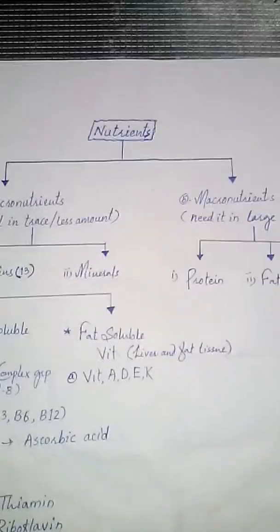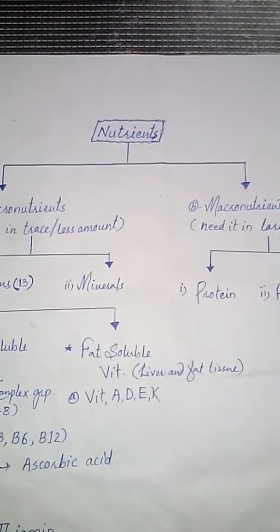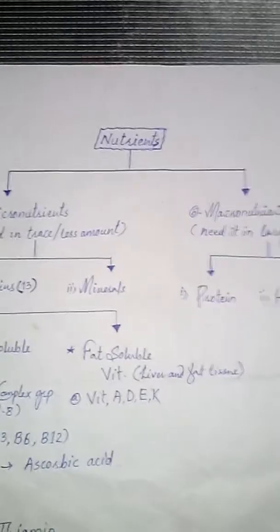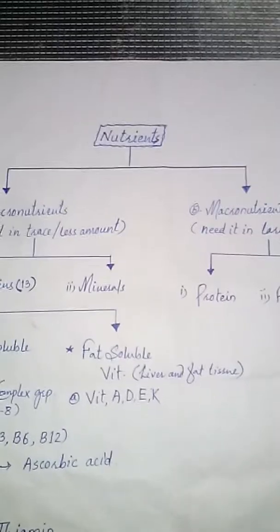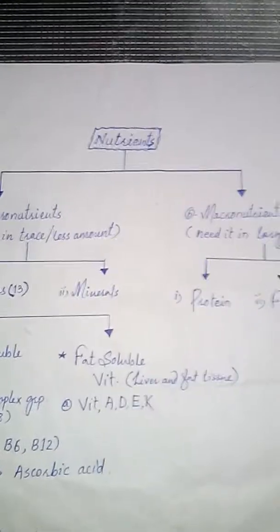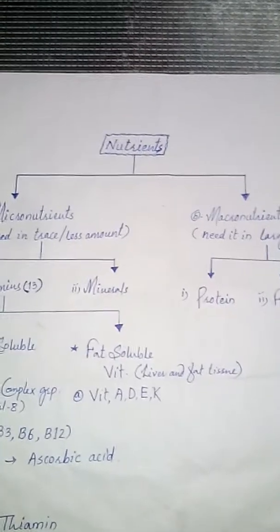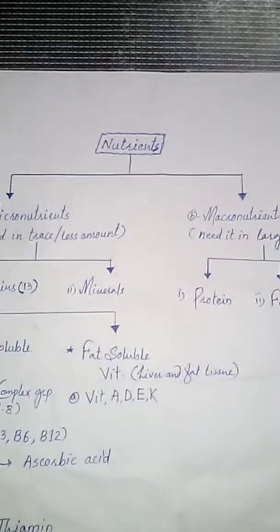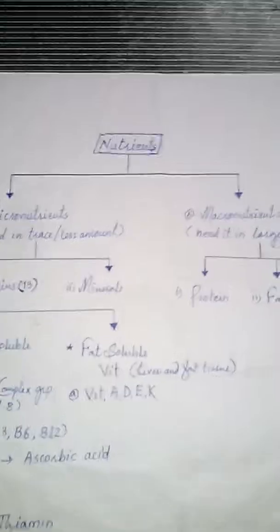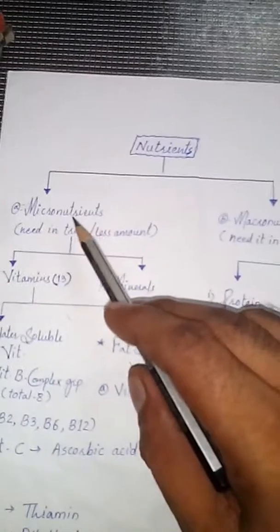Hello friends, here I am with one more lecture on the topic nutrients. A nutrient is a substance or a molecule which provides nourishment to the living organism, as it is essential for growth, development, and different types of other processes like reproduction. It also provides our body energy. So nutrients are mainly divided into two types.